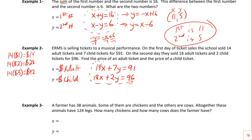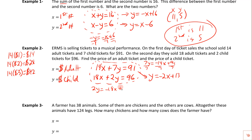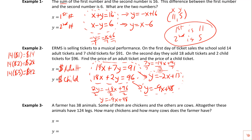We convert these to slope-intercept form. From 14x + 7y = 91: dividing by 7 gives y = -2x + 13. From 18x + 2y = 96: solving for y gives y = -9x + 48. These are the two equations we'll graph in the calculator.